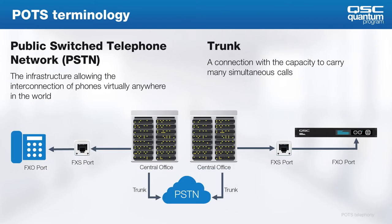Central offices connect phones to each other using a public switched telephone network, or PSTN. The links from the CO to the PSTN are typically trunks, where many calls are bundled to the global telephony network. These days, trunks are no longer bundles of analog cabling — instead, networks link all these in some sort of voice over IP technology. To put it all together: FXO devices, phones or Q-SYS, connect to the FXS ports provided by the central office, and calls are made through the CO to the PSTN, which can theoretically connect us to any other phone in the world.